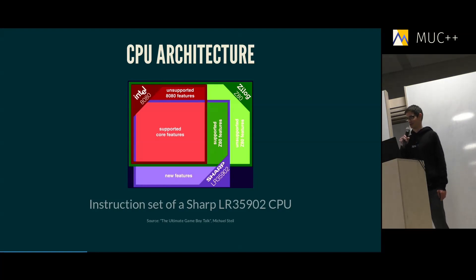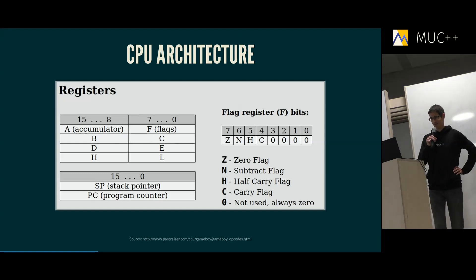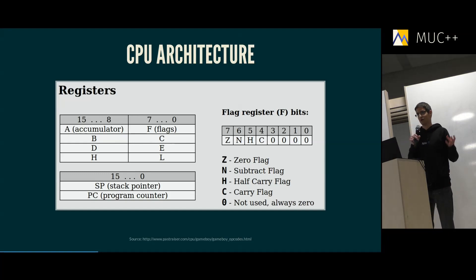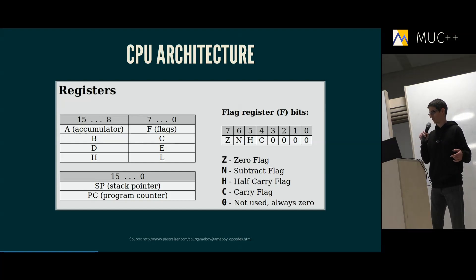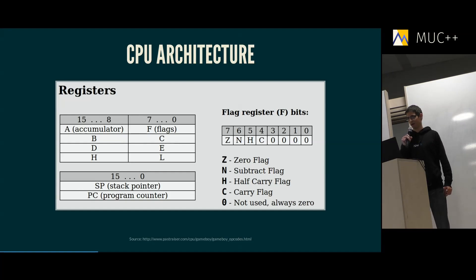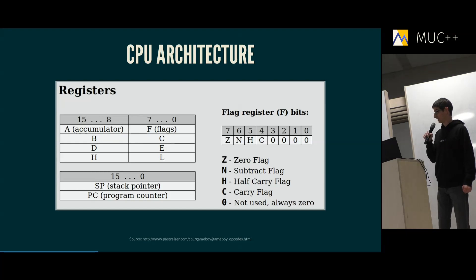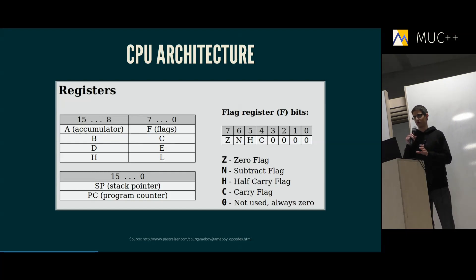It also has a couple of features that are in neither of the other two CPUs. The Gameboy has a register set of eight 8-bit registers, plus two 16-bit registers used to store addresses: the stack pointer and program counter. There's also a special flags register — if you execute an instruction and the result is zero, you see that in the flags register. Interestingly, you can combine two 8-bit registers to store 16-bit values, useful for calculating addresses since the Gameboy has a 16-bit address bus.